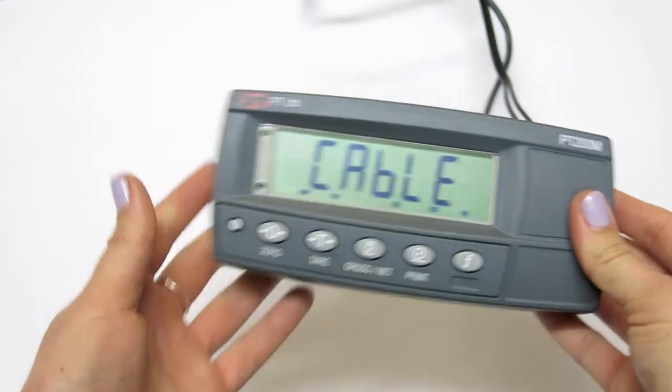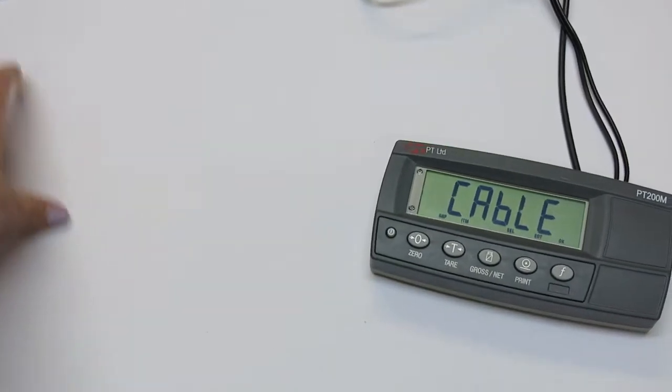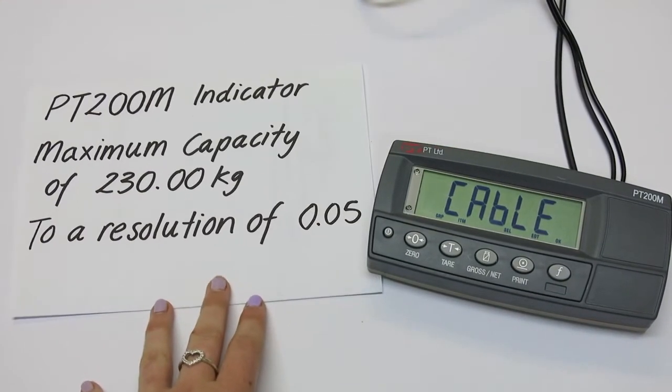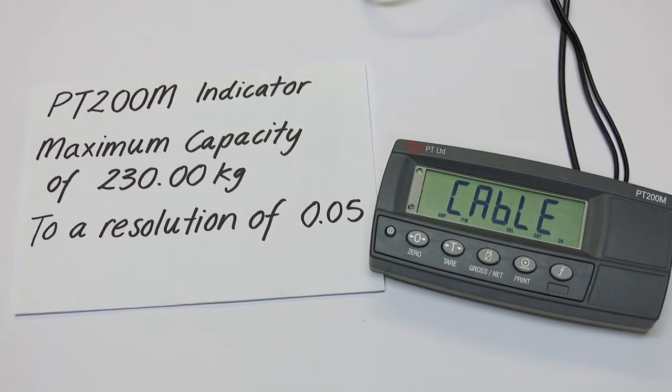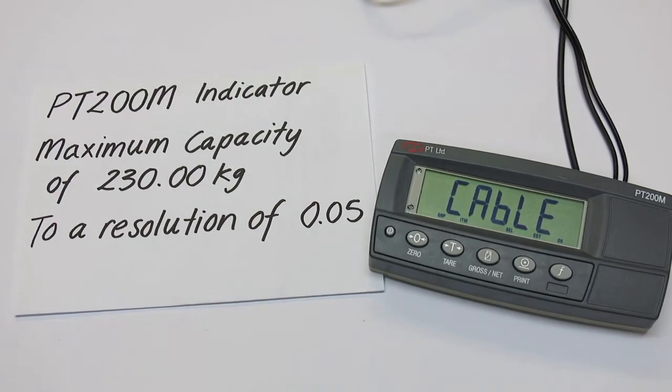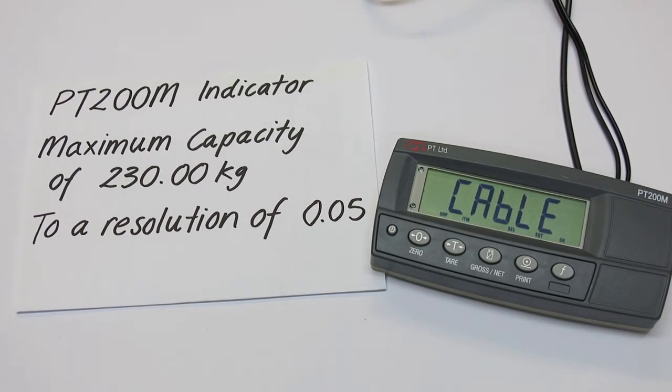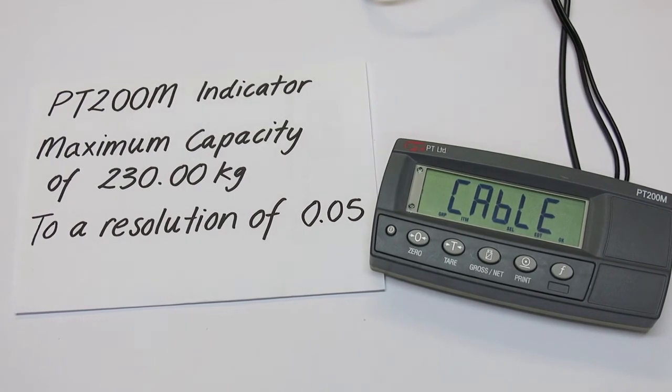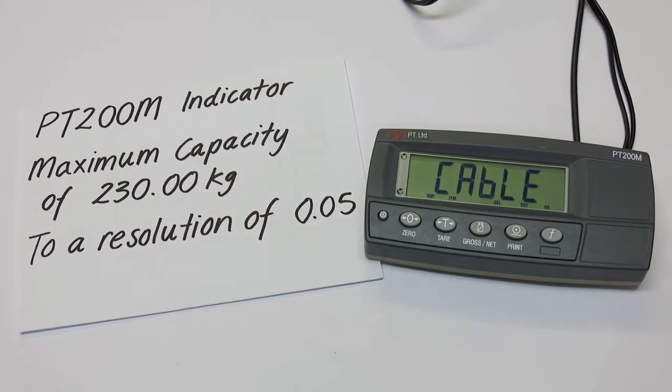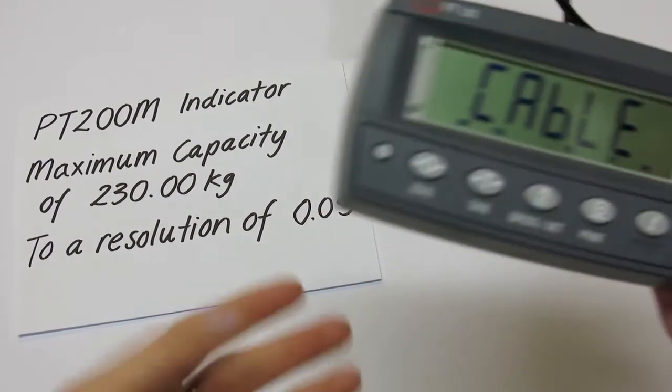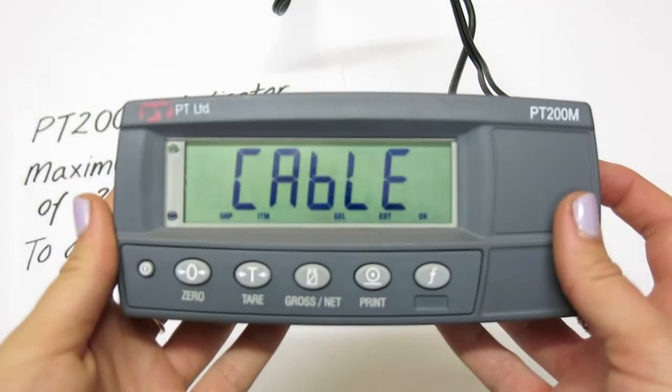For example, if we wanted the indicator to meet a certain set of requirements such as these, we would need to work through the build menu and define each parameter to get us a maximum capacity of 230 kgs to 2 decimal places with a resolution of 0.05. The first parameter we set is the decimal place depending on the amount of resolution needed.